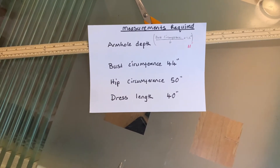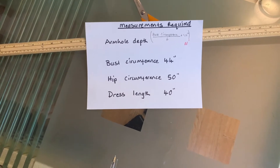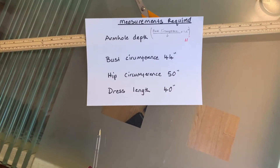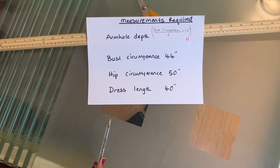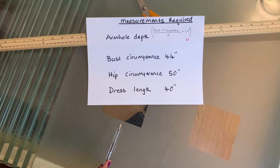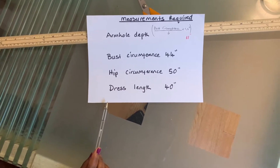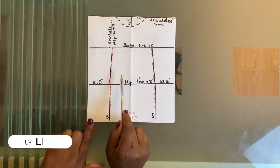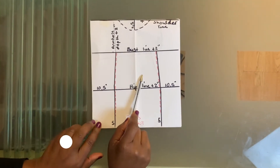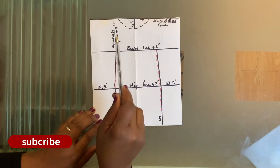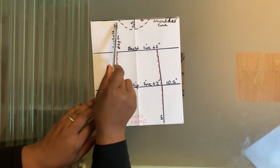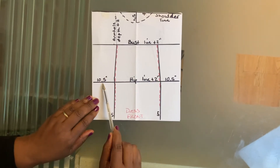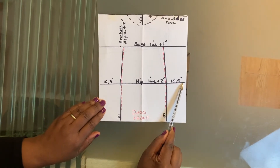These are the measurements required. The armhole depth is obtained by dividing the bust circumference by 6 and adding 1.5 inches — mine is 11 inches. You also need your bust circumference and your dress length. This is the plan for the dress: the shoulder line, the bust line, and the hip line.